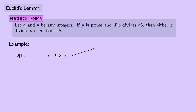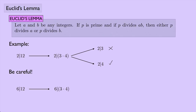Euclid's Lemma says that either 2 divides 3 or 2 divides 4. In this case, 2 does divide 4 and does not divide 3, so the lemma holds. But be careful — it only works if p is prime. For example, 6 divides 12, so 6 divides 3 times 4, but 6 divides neither 3 nor 4. That's fine, because 6 is not prime, and the lemma only applies when p is prime.